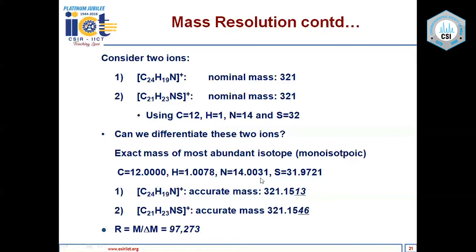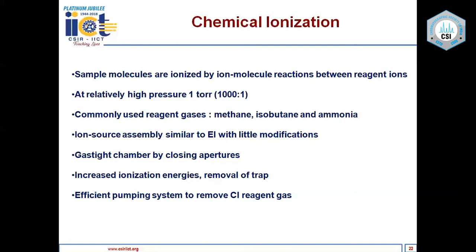Accurate masses are well documented in textbooks. When two ions differ at the ppm level, the resolution required to separate them can be as high as 97,000. Essentially, each molecular formula has a unique accurate mass, and high resolution mass spectrometry uses this to derive elemental compositions.